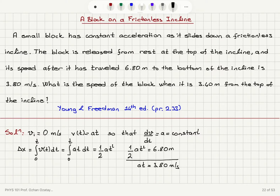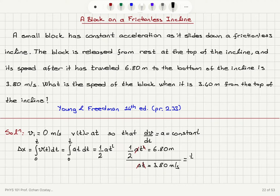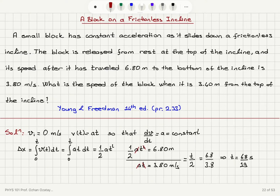If we take the ratio of these two equations, the a's will cancel and one of the t's will disappear, giving t over 2. So t over 2 equals 6.8 divided by 3.8, which means t equals 68 divided by 19 seconds, because the factor of 2 turns 3.8 into 1.9. That is the time of travel.